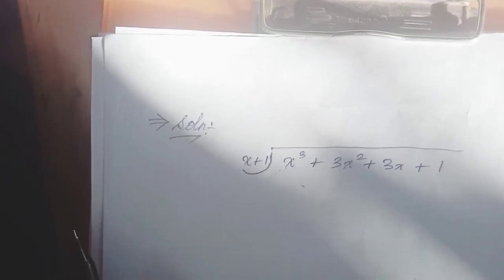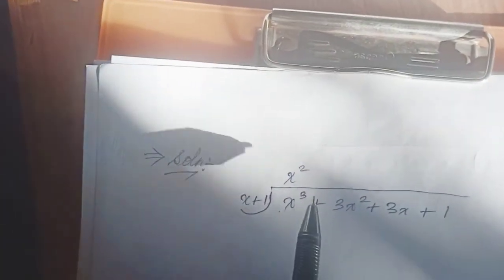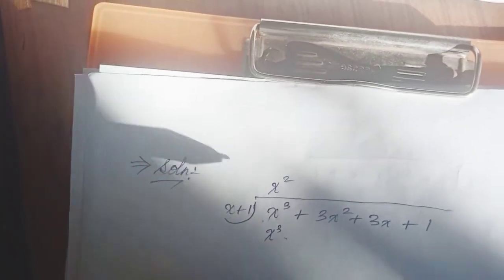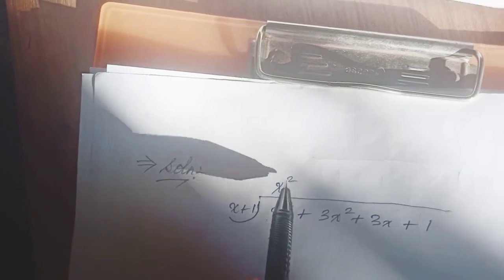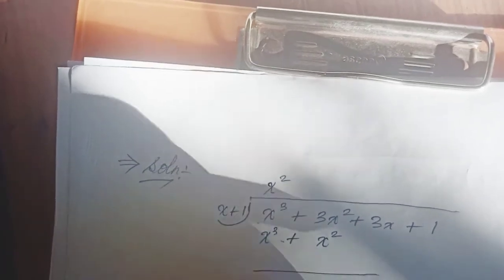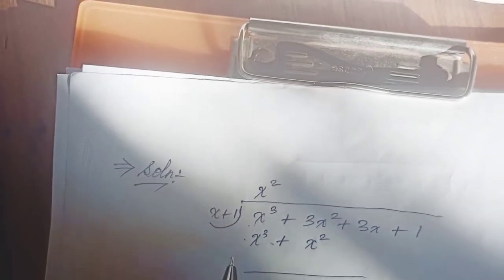x squared multiply x equals x cubed. x cubed alone here. Now x squared multiply by one. We subtract. The plus changes to minus.